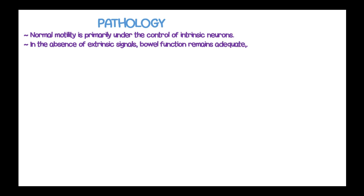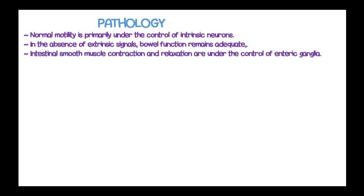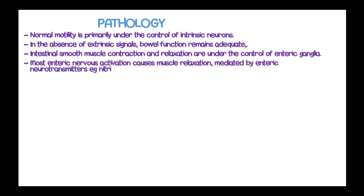Normally, motility in the gastrointestinal tract is primarily under control of intrinsic neurons. In the absence of extrinsic signals, bowel function remains adequate — this is where the enteric nervous system is also referred to as a second brain. Intestinal smooth muscle contraction and relaxation are under control of the enteric ganglia. Most enteric nerve activation causes muscle relaxation, mediated by enteric neurotransmitters such as nitric oxide.